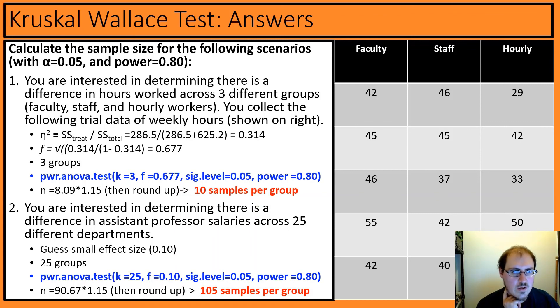Here for one, we're given this information on these three different groups, faculty, staff, and hourly. We'll need to run something like ANOVA in R to get our sums of squares of treatment and total. We'll get here to get a partial eta squared, which we plug back into this equation to get an F or an effect size of 0.667. And three groups, effect size, so forth, times 1.15, round up 10 samples per group. So 30 samples total.